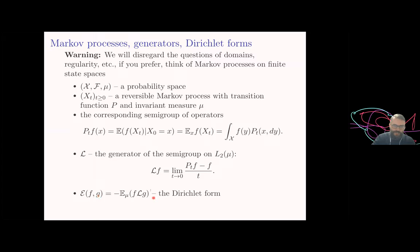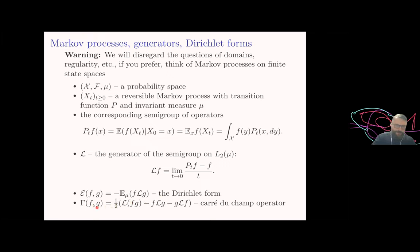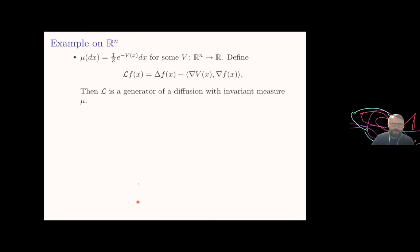Then we have the crucial object seen in the other lectures: the Dirichlet form, defined as the integral of f times L g with respect to mu. From this definition we can see it is a symmetric bilinear form — we can interchange g and f thanks to L being self-adjoint. Perhaps the most mysterious object is the Carré du Champ operator, the square of the field, given by the formula gamma(f,g) = (1/2)[L(fg) - fLg - gLf]. The Dirichlet form is recovered by integrating gamma with respect to mu. The relation between the two: gamma is also a bilinear form, but it produces a function rather than a real number.